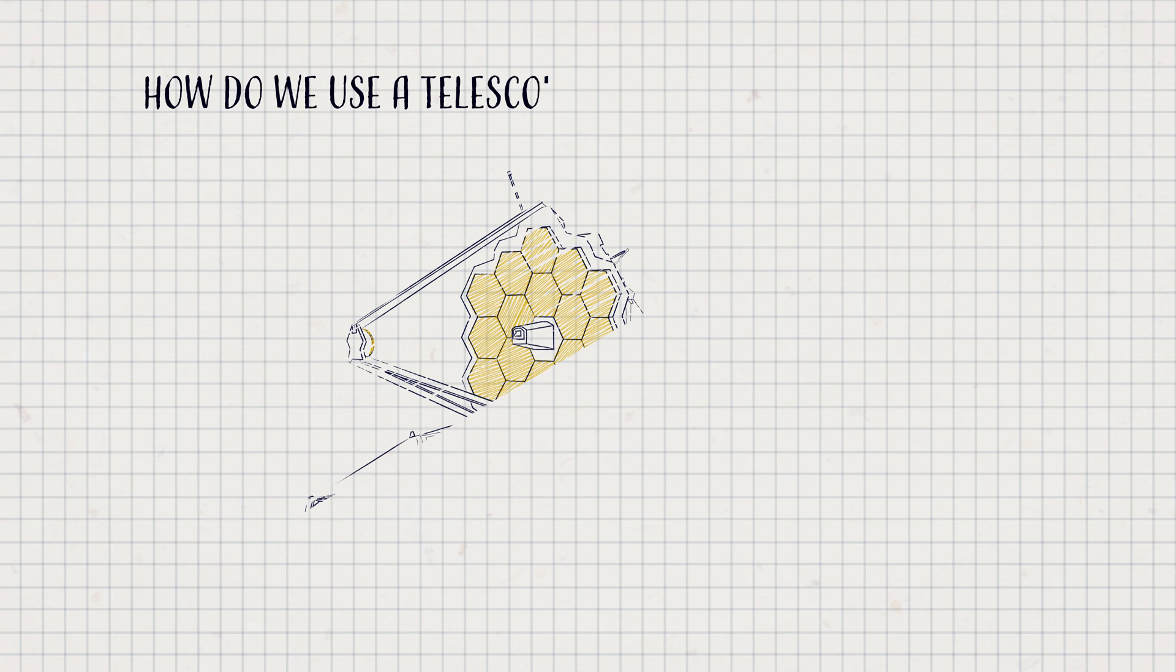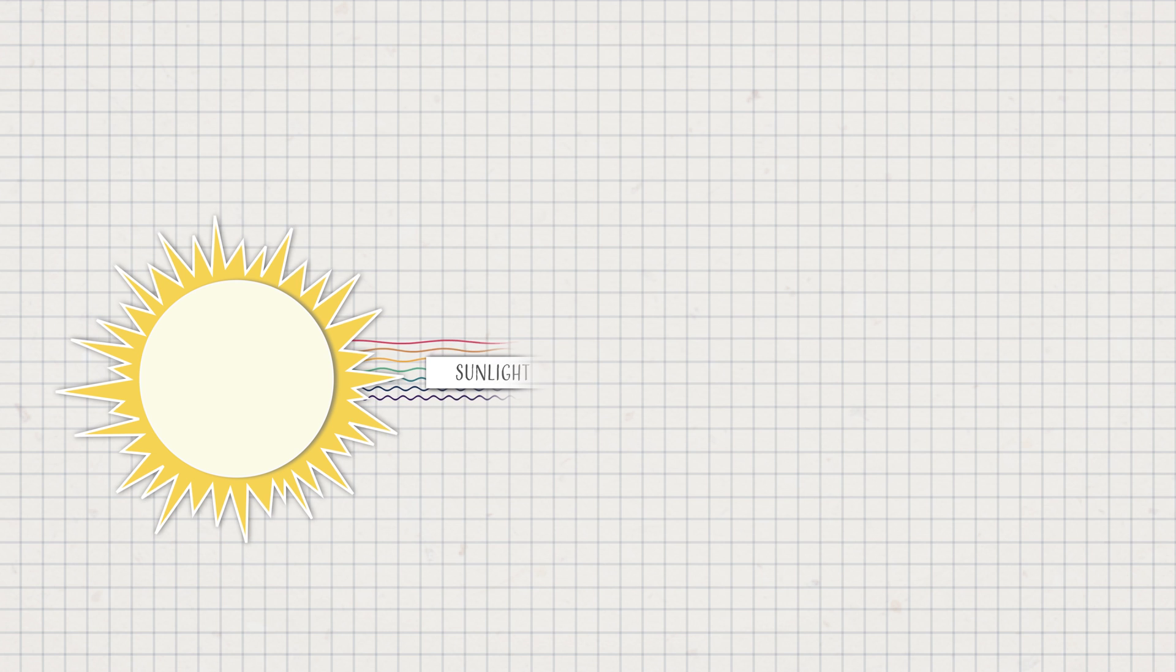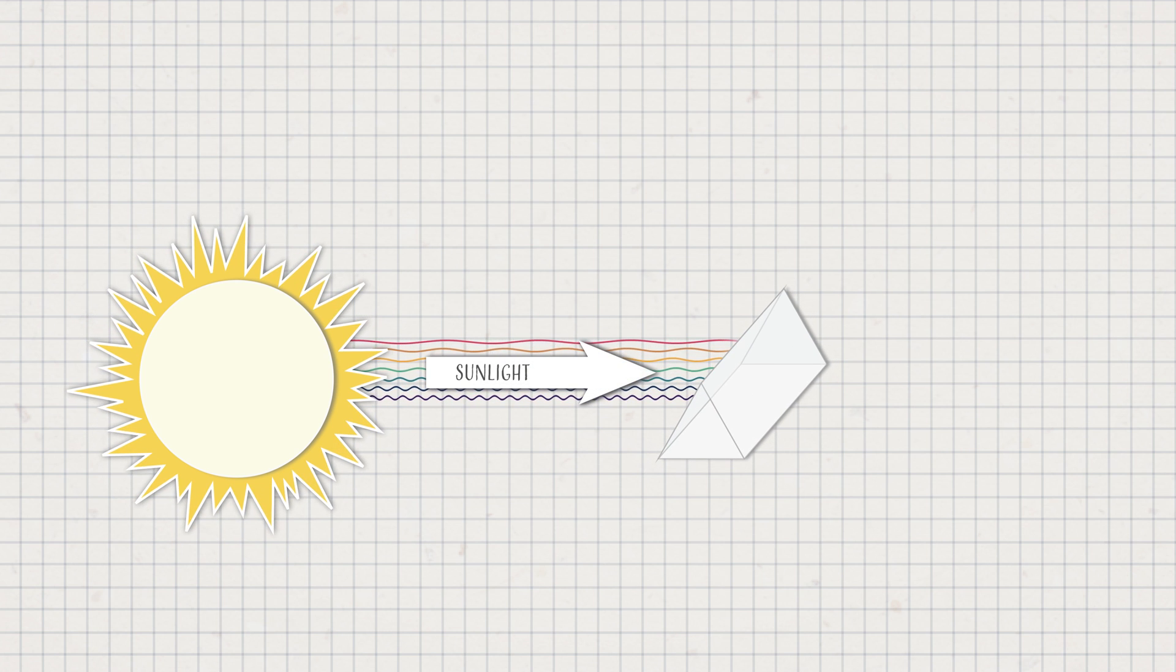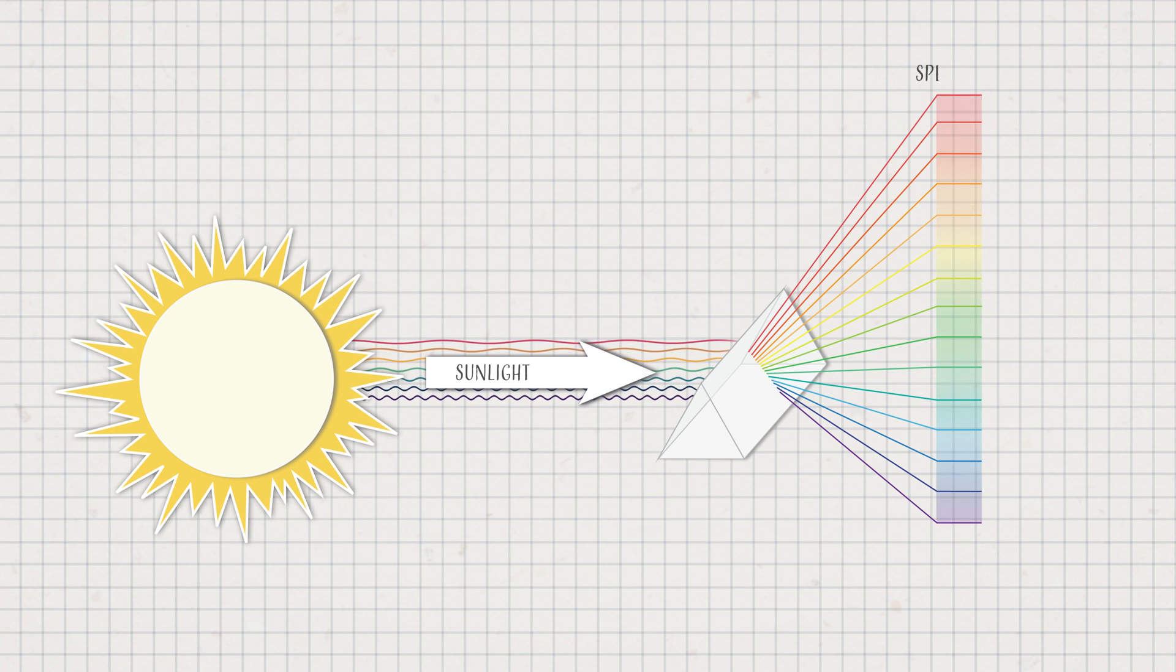So how do we use a telescope to read transit light? Stars emit light at many wavelengths. Like a prism makes a rainbow, we can separate light into its separate wavelengths. This is called a spectrum.